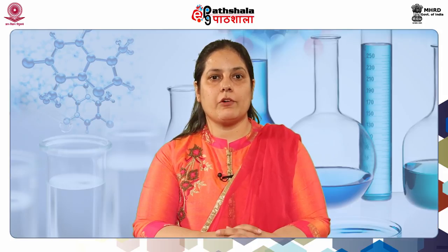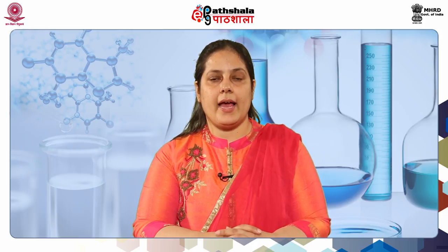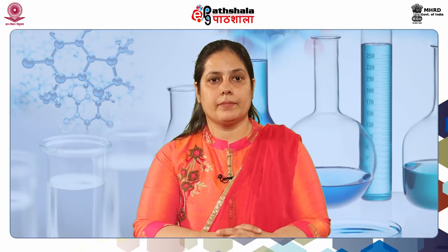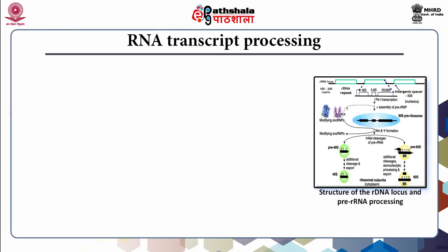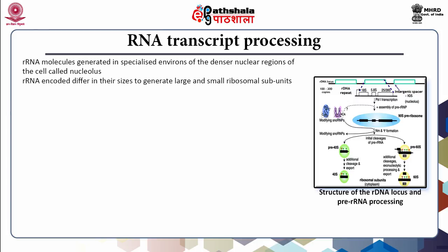A complex sequence of processing steps is required to gradually release the mature RNAs from this precursor. The DNA transcripts termed rDNA that generate the vast array of rRNAs are customarily repeated hundreds of times. The rRNA molecules are synthesized in the specialized, denser nuclear region called the nucleolus, which encodes the rRNA genes. The encoded rRNAs differ in size as large and small ribosomal RNA molecules, contributing to the formation of subunits and units of ribosomes.